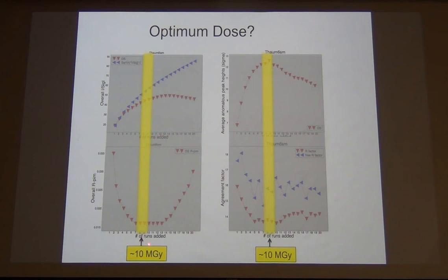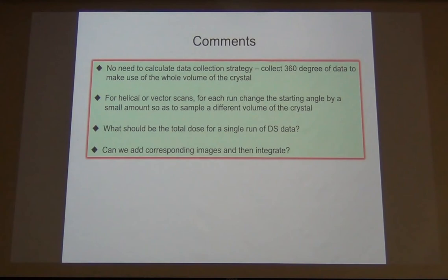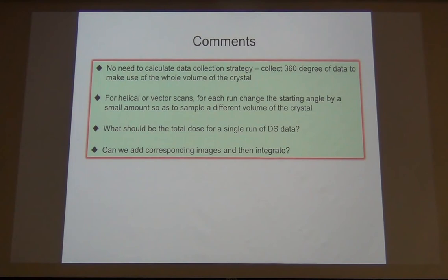The question remains: what should the dose per single run be? We used a simple logic — if six million pixels each have one count, that means high background. With six to seven million counts per image, that might be a good estimate for dose per run. Another question we asked was whether instead of integrating every run separately and scaling later, can we add the images corresponding to the same angles and process them together? We've done some analysis but are not conclusive about those results.